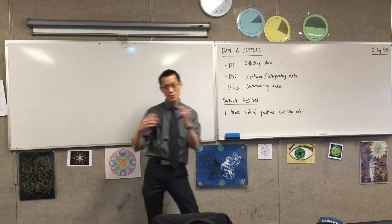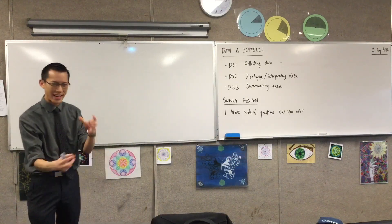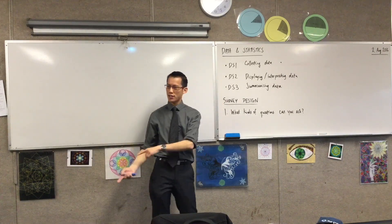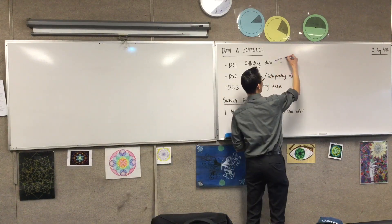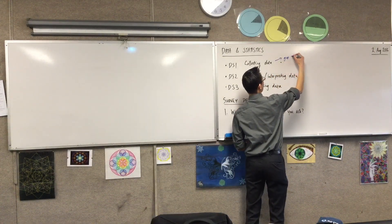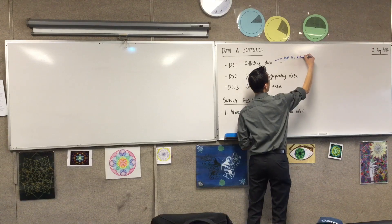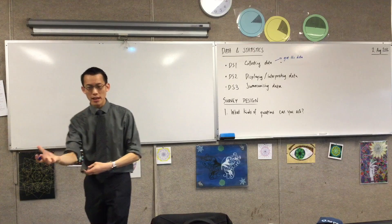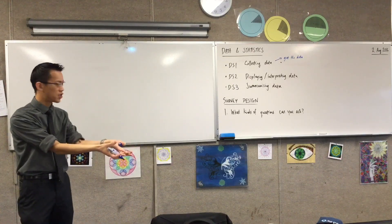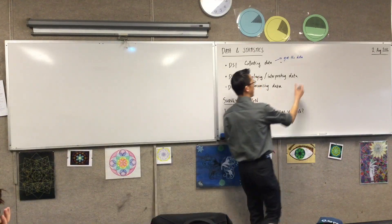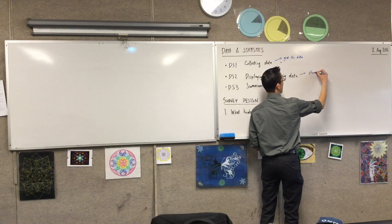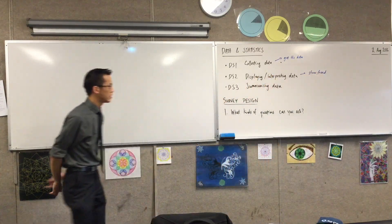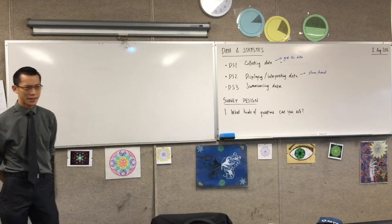Just like we did with the driving focus study, I want to boil that down into some simpler language. Collecting data — first you want to get the data, that's the first thing you need to do. Secondly, once you've got that data, you want to be able to show it and also be able to read it if someone else is showing you data. So that's what displaying and interpreting means — show it in some form, and there are lots of different forms, and be able to read and interpret it as well. Know what it means.